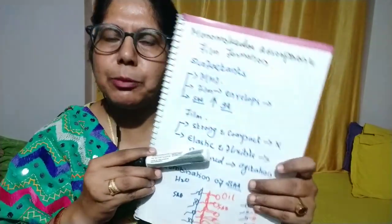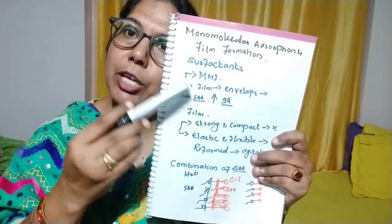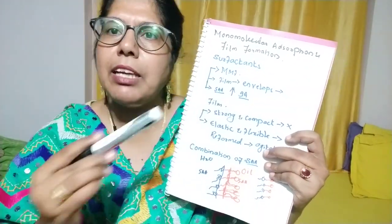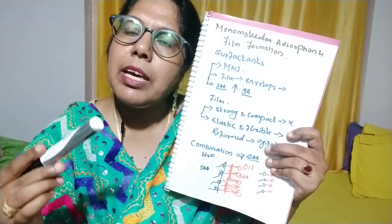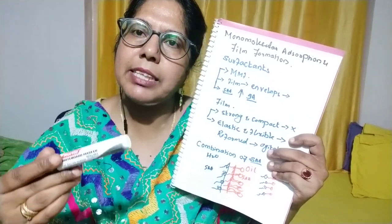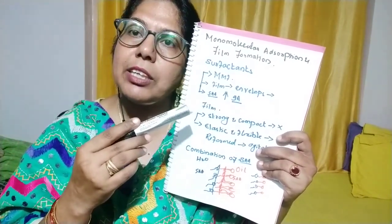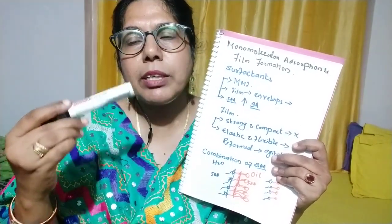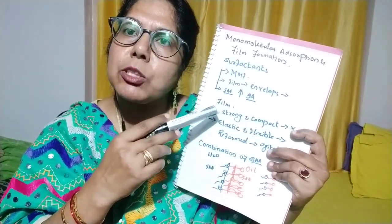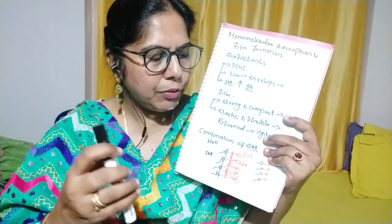The surfactant or surface active agent used in monomolecular adsorption theory should have high interfacial activity — meaning it should have a higher capacity to reduce the interfacial tension between the oil phase and the aqueous phase. The film it forms should be strong, complex, and compact in nature.